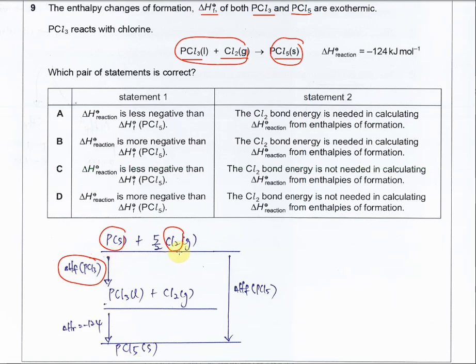And the P and CL2 also can form PCL5. So it goes down further. So this will be the Delta HF of PCL5.